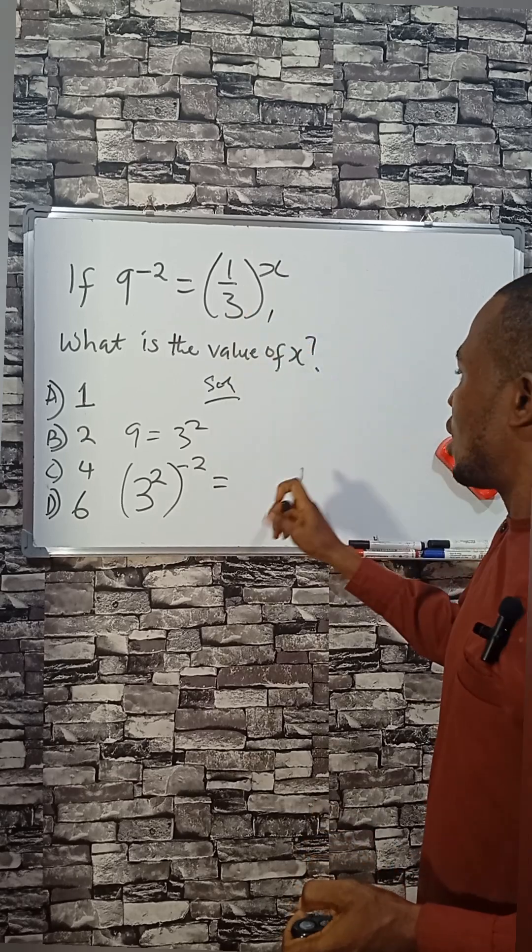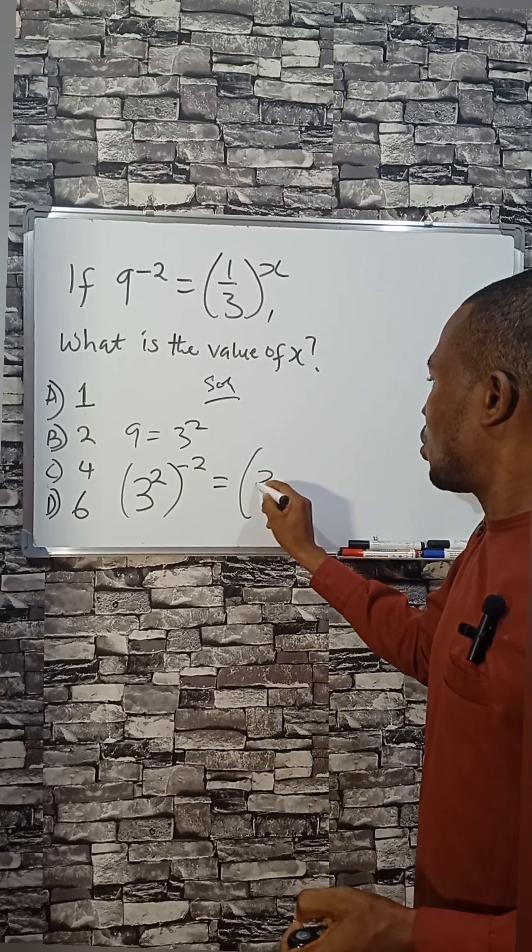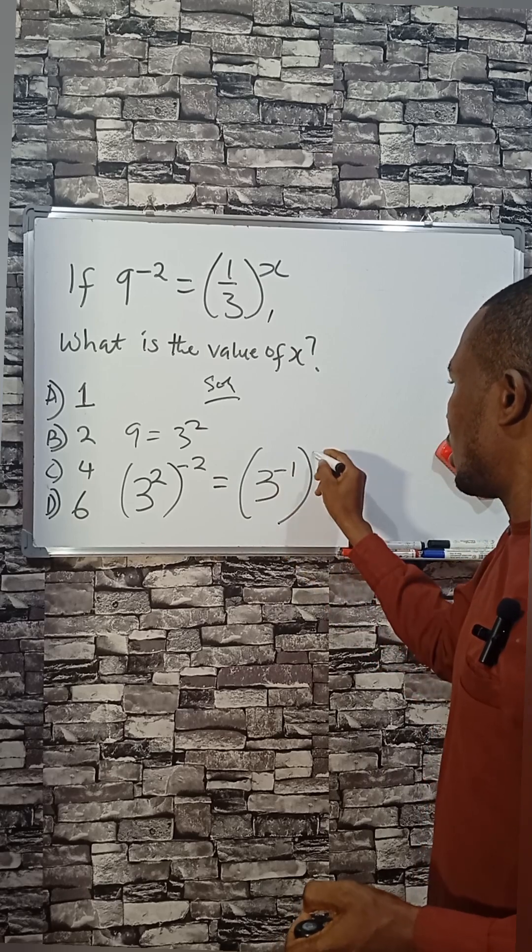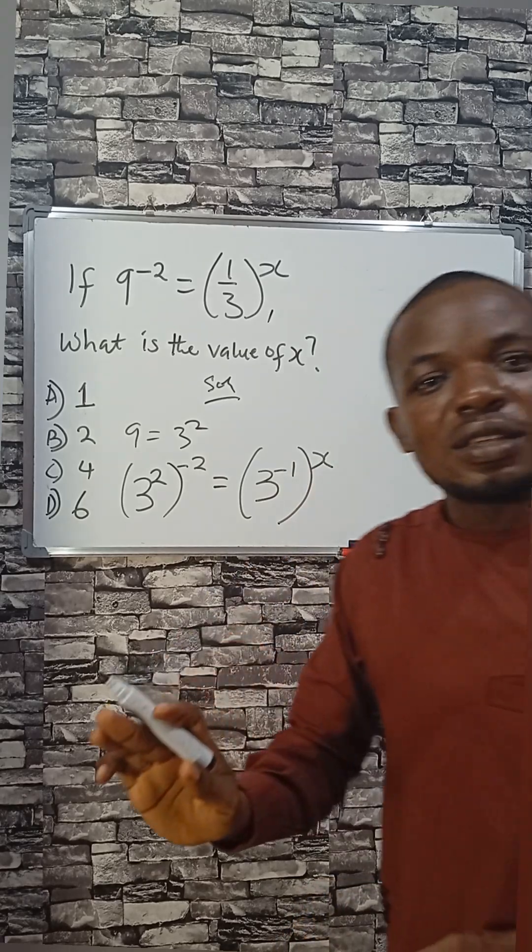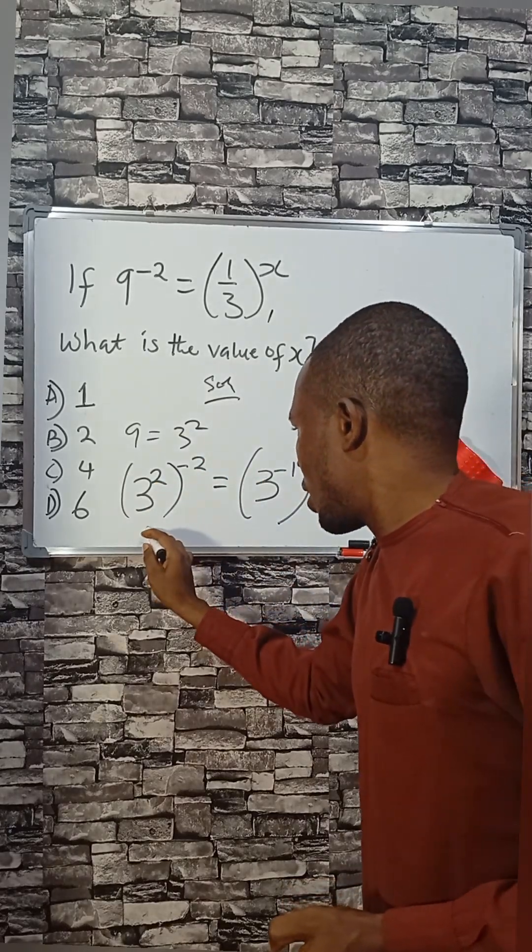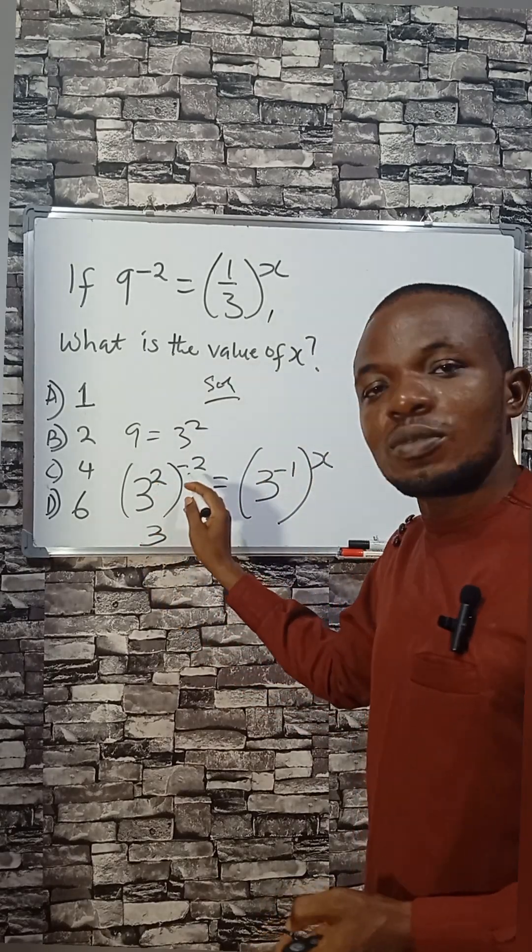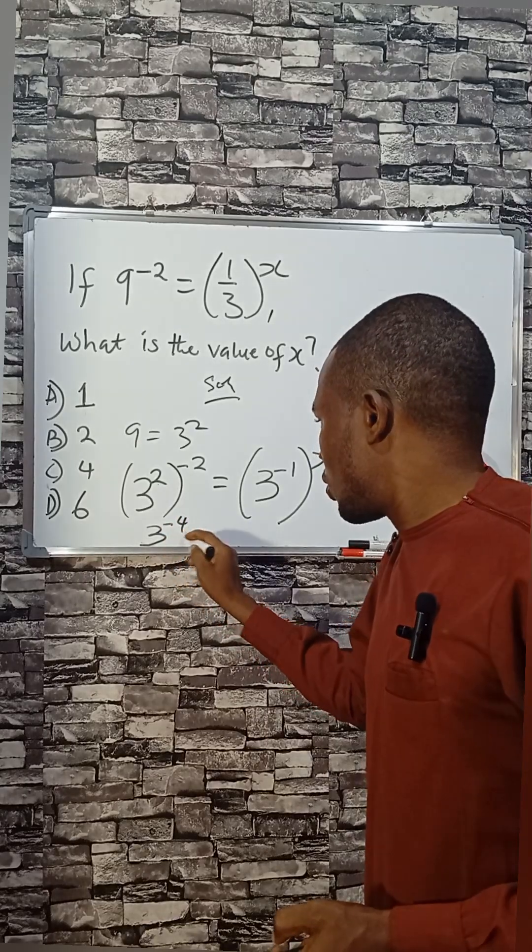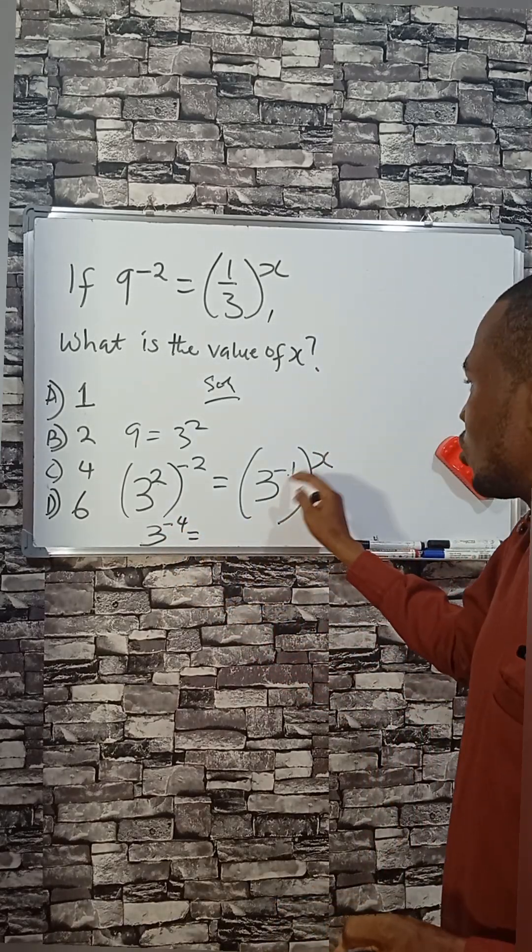This is the right-hand side, so we can replace this as 3 raised to the power of minus 1, then x. The indices permit us to multiply the powers. So we have 3 to the power of 2 times minus 2 is minus 4, and here minus 1 times x.